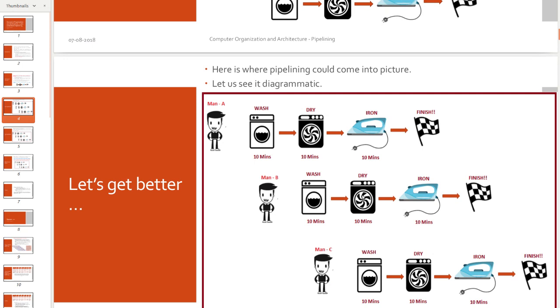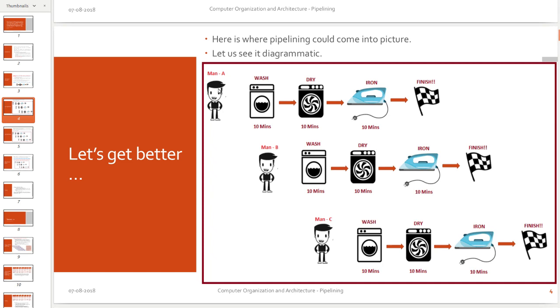Now, I am going to take a better example for you to understand how exactly pipelining can be related to this concept. Assume that we have got man A here who is going to first wash his clothes for 10 minutes, then dry his clothes for 10 minutes, and then iron the clothes for 10 minutes. So totally man A needs 30 minutes. Assuming there is no pipelining supported. Man B will come, he will then do it for 30 minutes. Man C will come, then he will do it for 30 minutes. So totally 30 plus 30 plus 30 is 90 minutes is needed if there is no pipelining supported.